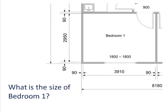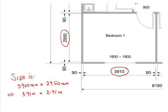So first off, what is the size of bedroom one? You can get it in either meters or millimeters. It's 3910 millimeters by 2950 millimeters, which is 3.91 by 2.95 meters.